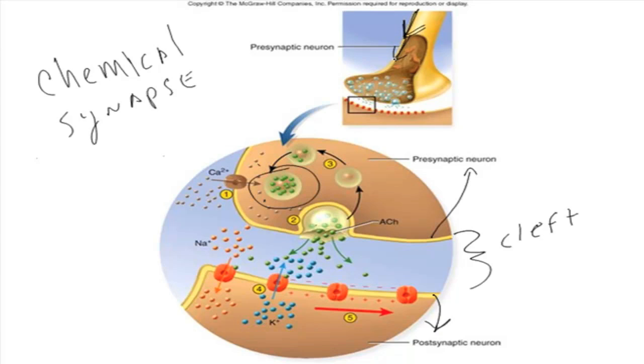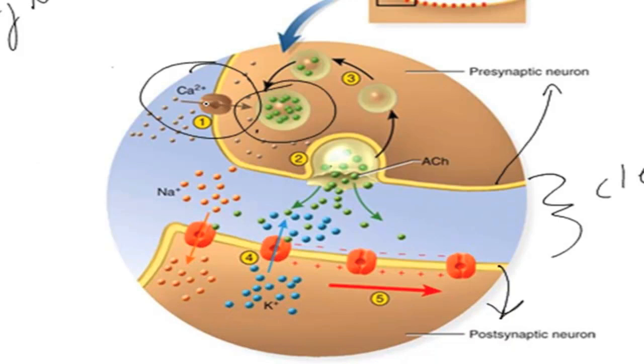The action potential travels down to the synaptic end bulb on the axon. When it reaches the end of the synaptic end bulb, that membrane has in it calcium ion channels that are voltage-gated. When the action potential reaches the voltage-gated calcium ion channels, they open in response to that change in membrane potential.